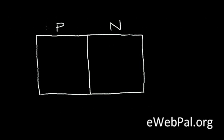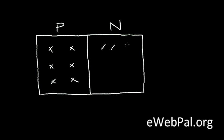In the previous video, we talked about the P-N junction. In the P material, the predominant charge carriers are holes, which I'll represent by the symbol X. In the N region, we said we had a predominance of electrons as charge carriers, and I'll represent that by this dashed line.